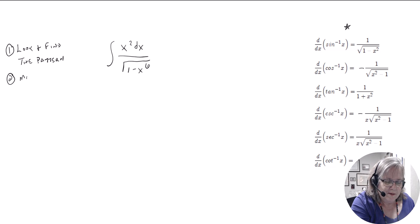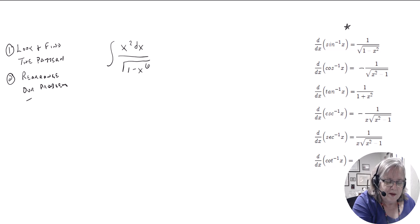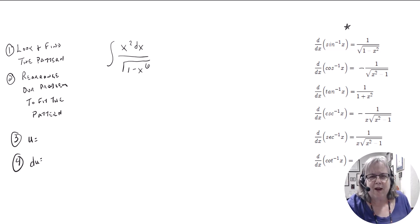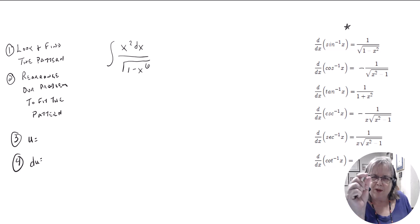Then we're going to rearrange, if needed, our problem to fit the pattern. Then we're going to take our best guess as to what u is, find out what du is, and work that back into our problem. Your lists don't have to be complete sentences — they can be just little brief reminders to keep your brain on task and keep it flowing forward.